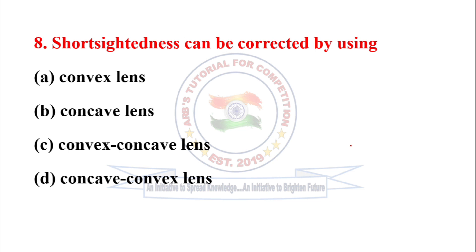Next question: Short-sightedness can be corrected by — it is also known as myopia. It is a problem with seeing distant objects and is corrected by using a concave lens, so option B is correct.